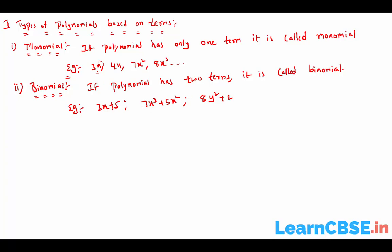Remember that terms are separated by plus or minus, not multiplication. So in 3x, the entire 3x is one term — 3 and x together form a single term. Even 4xyz is a single term and is a monomial in three variables. Terms are separated by plus and minus.